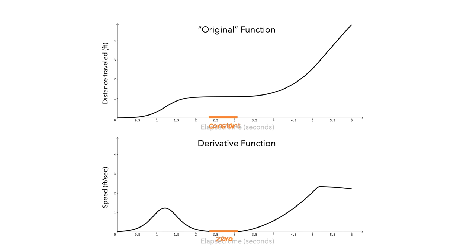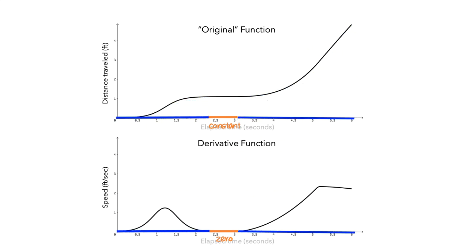For all of the other values, as time increased, the distance also increased. Thus, for these time values, the value of the derivative function was positive. So we can summarize this as: if the value of the function increases as time increases, then the value of the derivative is positive for the corresponding times.